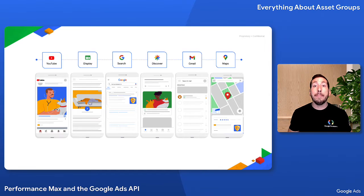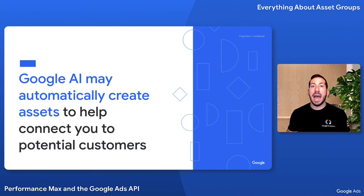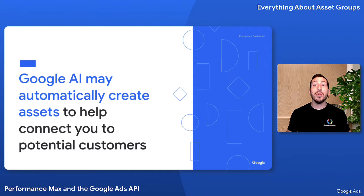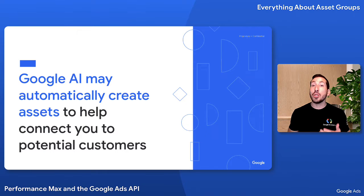You can create multiple asset groups per campaign to group assets by theme or to group assets with different targeting. Google may automatically create assets to help you connect with potential customers. When this setting is turned on, Google uses AI to generate additional assets like headlines and descriptions to be used in combination with the assets you provide.